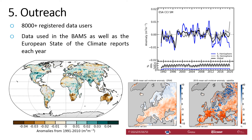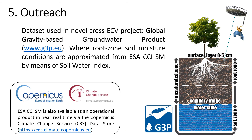Since the beginning of the project we have had more than 8000 users registered through our website, and ESA CCI is continuously providing the basis for many peer-reviewed publications every year. Each year the products are also included in the BAMs as well as the European State of the Climate reports. ESA CCI soil moisture is also available as an operational product in near real time via the Copernicus Climate Change program. Our product is also part of a new and exciting cross-ECV project G3P, which stands for Global Gravity Based Groundwater Product and aims to provide an operational groundwater product in the future.